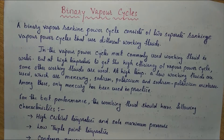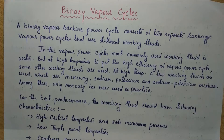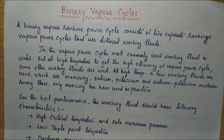In general, in the Vapor Power Cycle, the most commonly used working fluid is water. But at high temperatures, sometimes water is not used to get high efficiency for the Vapor Power Cycle. So to get high efficiency from the Rankine Cycle, some other working fluids are also used. Some examples are mercury, sodium, potassium, and sodium-potassium mixture. But out of all these working fluids, only mercury has been used in practice.